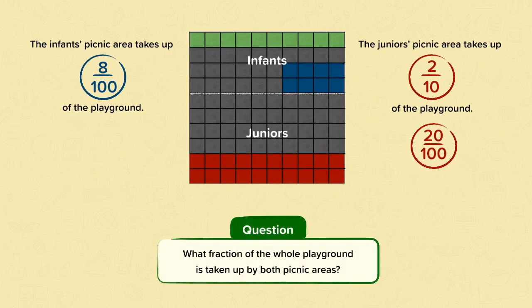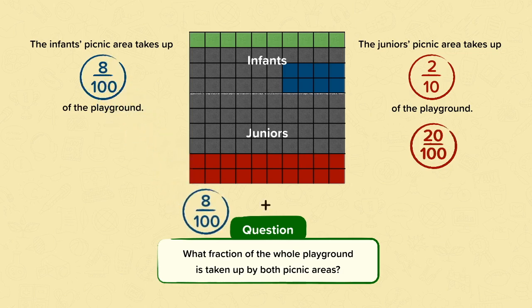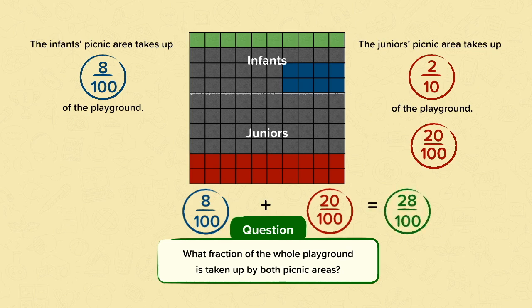Now see if you can work out what fraction of the whole playground is taken up by both picnic areas. Pause the video and have a go. Well done if you did eight hundredths add twenty hundredths. You can add these two fractions together because both denominators are the same. When you add fractions, the denominator always stays the same — you only add the numerators. So you should have got twenty-eight hundredths.